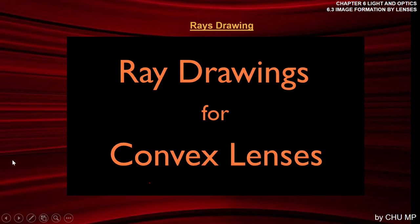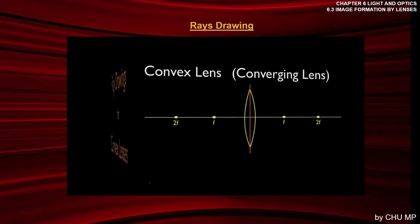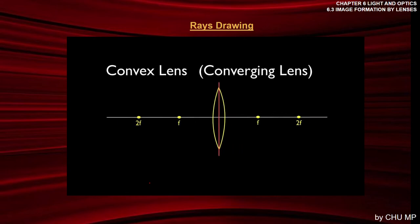In today's video, we're going to go over drawing ray diagrams for convex lenses. This is our general setup that we'll use, which is what you typically see in a textbook. Here we have our convex or converging lens and some important parts of the diagram. One of them is the principal axis — this white line that runs horizontally through the center of the lens.